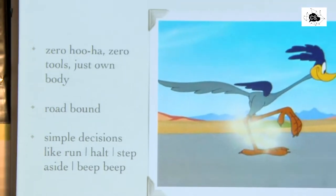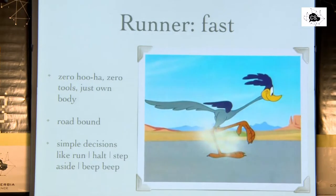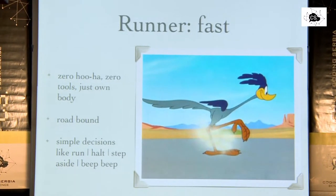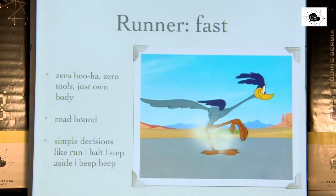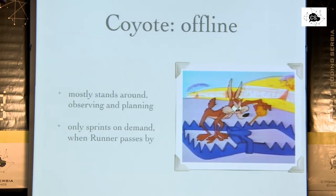When the runner just reacts spontaneously, the whole thing fails. The Road Runner, on the other hand, doesn't have this mumbo-jumbo — he only uses his own body and legs. He's totally road-bound, always on the run, and his decisions are pretty simple: stop, run, make a step aside depending on what is happening right now, or just do a 'meep meep.'